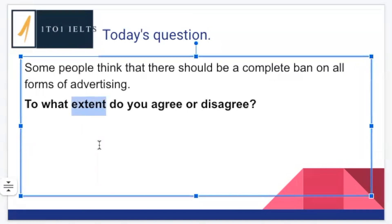How do we address the 'extent' part of the question? We always want to have a strong opinion — so simply: 'I strongly agree,' 'I strongly disagree,' 'I totally agree,' 'I totally disagree,' 'I completely agree,' or 'I completely disagree.' Some form of strong adverb to indicate your extent. We need to address this because it is part of the question, and to get as many marks as possible for task response, this is a key part that needs to be repeated in our conclusion.